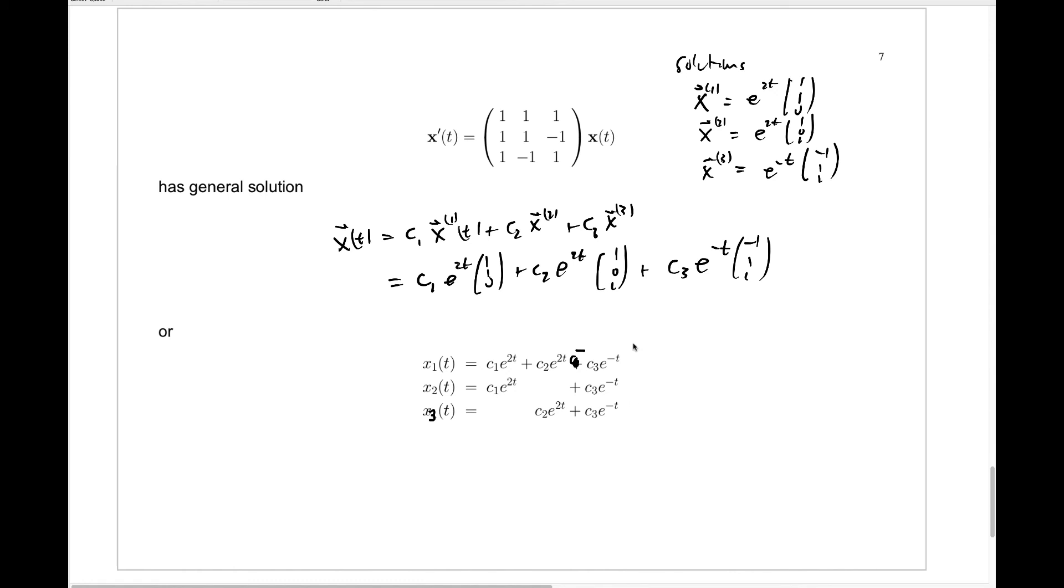And let's see if this actually works. Let's check. What do we have to check? Well, remember this system of equations looks like x1 prime is x1 plus x2 plus x3, x2 prime should be x1 plus x2 minus x3, and x3 prime should be x1 minus x2 plus x3. Does that actually work here?